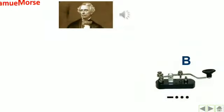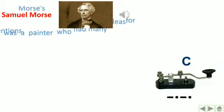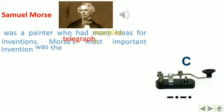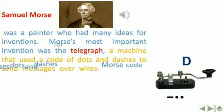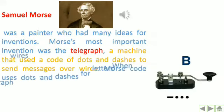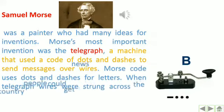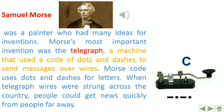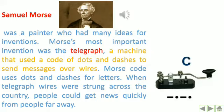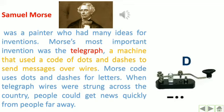Samuel Morse was a painter who had many ideas for inventions. Morse's most important invention was the telegraph, a machine that used a code of dots and dashes to send messages over wires. Morse code uses dots and dashes for letters. When telegraph wires were strung across the country, people could get news quickly from people far away.